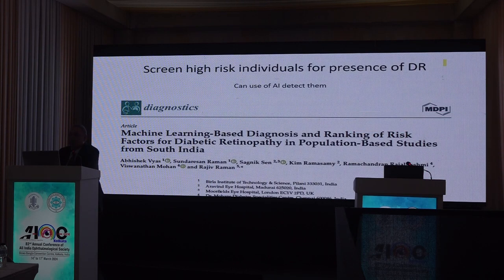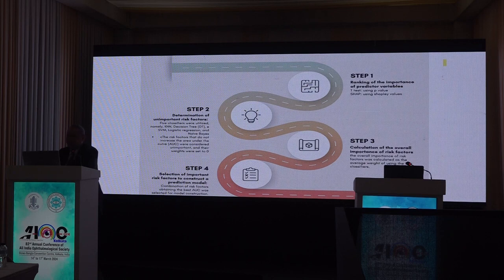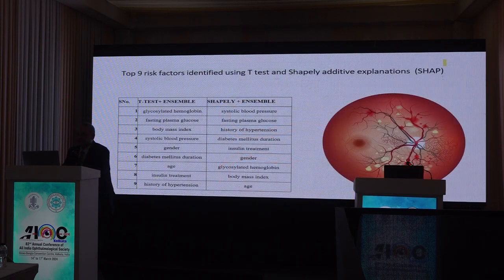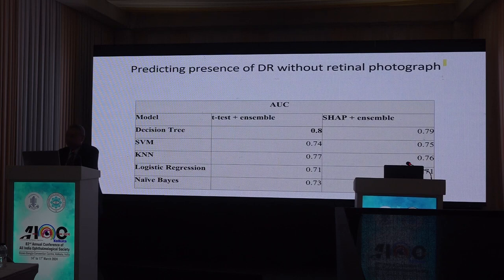What we did was look at all population-based studies from India — the Sankara Nethralaya study, Aravind Eye Institute, the LV Prasad study, and the Mohan Diabetes Study. We took raw data from all of these and created a risk factor engine. We used something called Shapley methods, which is more used in gaming, and identified the top nine risk factors for diabetic retinopathy. We then made an AI model — a decision tree giving accuracy of 0.8 AUC — to detect presence of DR. That means without a retinal image, using these risk factors, we can reduce the number of patients who will undergo retinal photography.